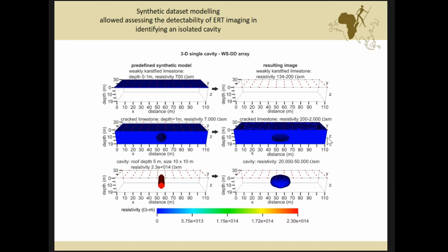So we have on the left side of the slice a predefined synthetic model. It must simulate different geological values. A first layer, a weakly karstified limestone, ranging between 0 and 1 meters of depth, showing a resistivity of 700 ohm meters. A second body, related to cracked limestone, that is greater than 1 meters, and resistivity of 7,000 ohm meters. The third body is a single cavity. Its top is located at the depth of 5 meters, showing a very, very high resistivity.